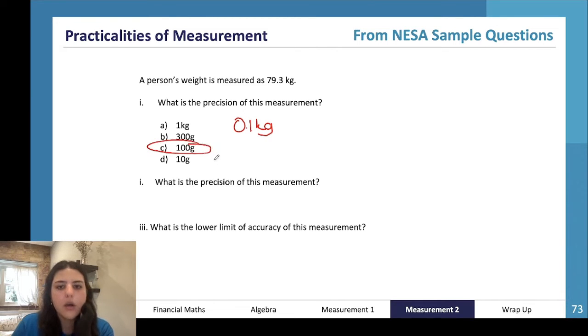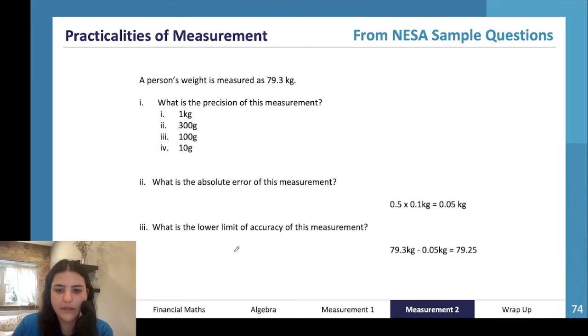We've already answered that. What is the lower limit of accuracy on this measurement? So we'll do our absolute error - half times 100 grams is going to be equal to 50 grams. The lower limit of accuracy has to be 79.3 minus what is 50 grams to a kilo - so 0.05. And that would give us, looking at answers here, 79.25.